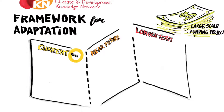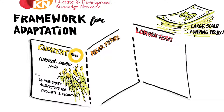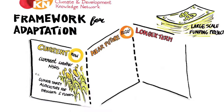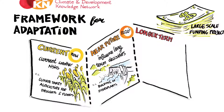Part 1 of the framework focuses on low-regret adaptation to address current weather risks. A good example would be adapting to existing droughts and floods by planting climate-smart crops. Part 2 focuses on building adaptation into near-term decisions that will have a long lifetime — for example, screening new infrastructure for its robustness and sustainability in the context of climate change.